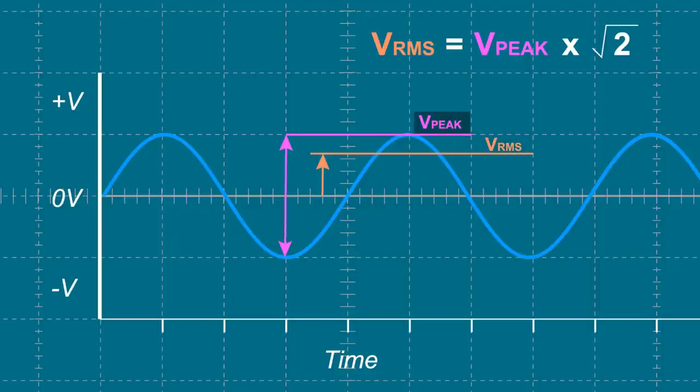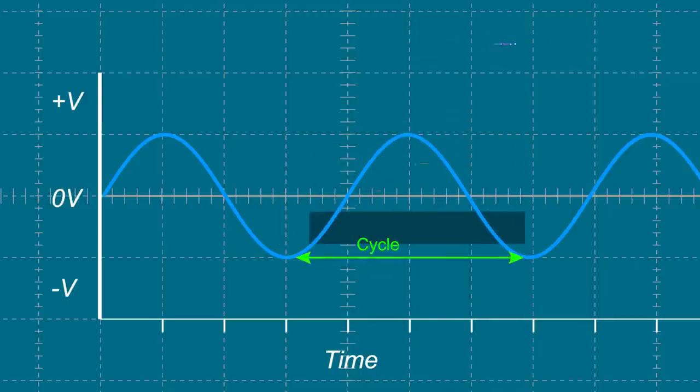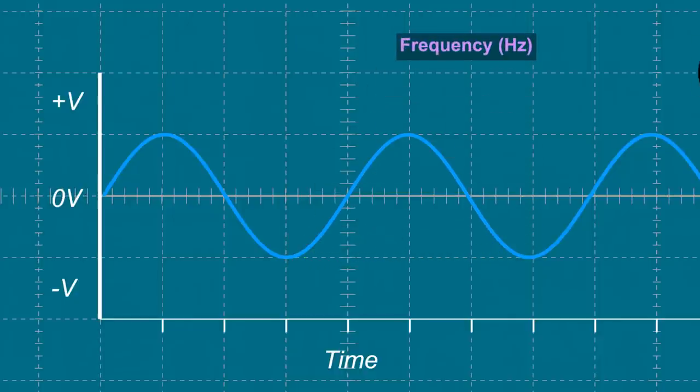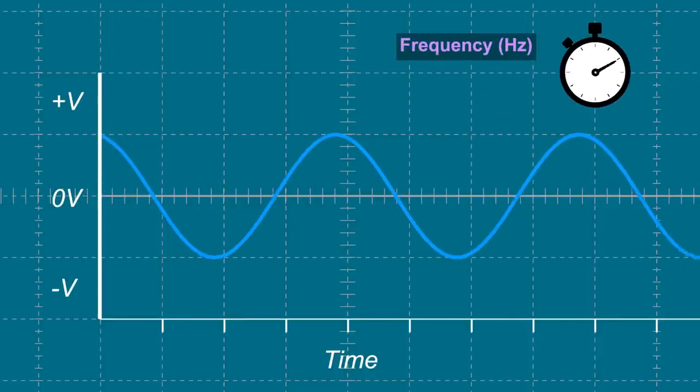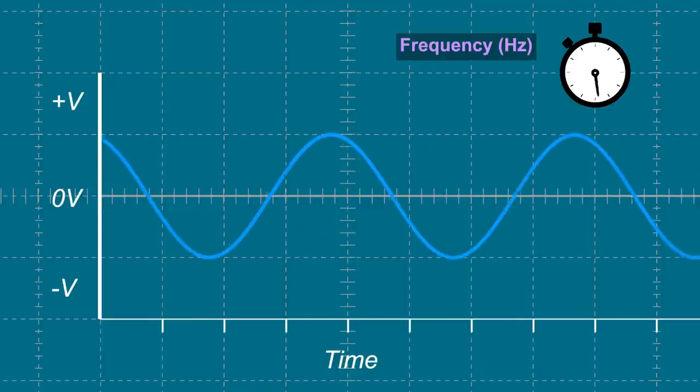AC waves are also measured by the distance or timing of one cycle which can be measured from any two equal points of the wave. For example, highest peak-to-peak or lowest peak-to-peak. The cycle can be used to determine the frequency of the waveform which is how many cycles per second measured in hertz.